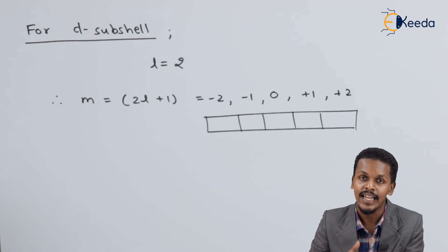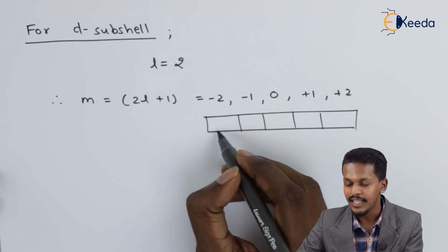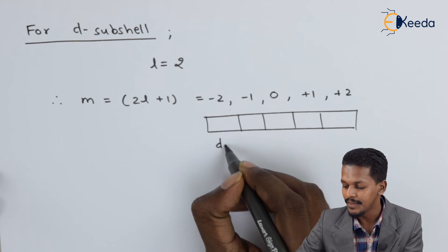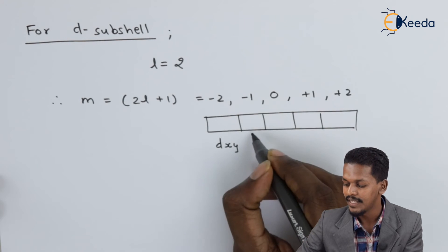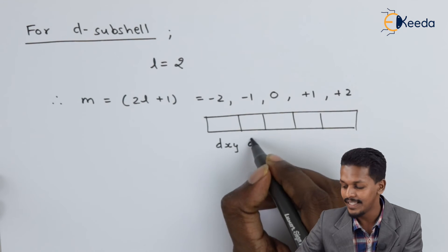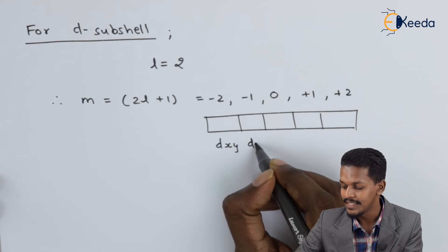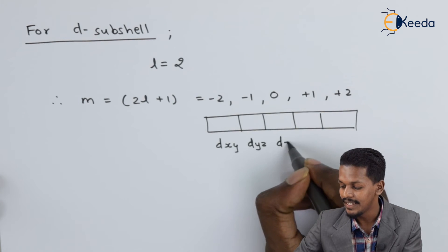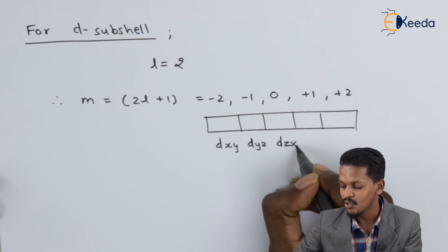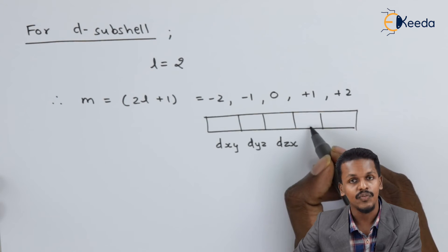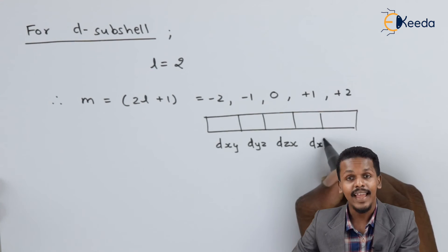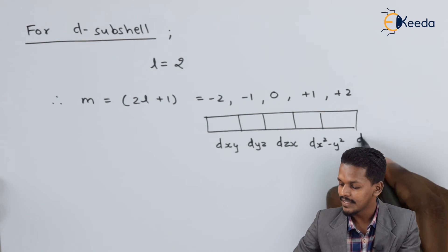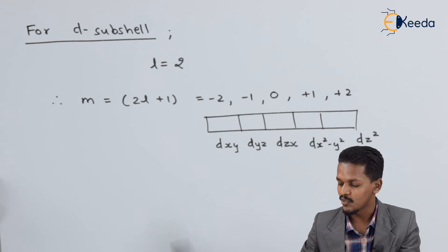The five D sub-shell orbitals have different representations: Dxy, Dyz, Dzx (or Dxz), D(x²−y²), and Dz².